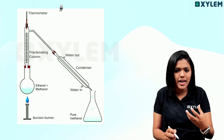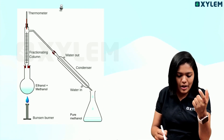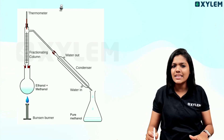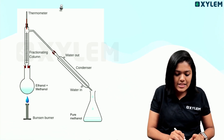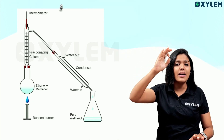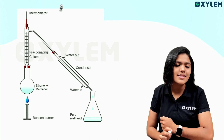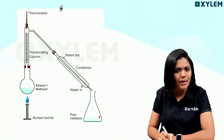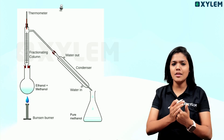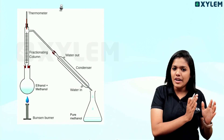Methanol boiling point is 65 degrees Celsius and ethanol boiling point is 78 degrees Celsius. When we heat the mixture, the boiling point of methanol is lower, so methanol vaporizes first. This is the fractionating column — evaporation and condensation occur. This is the water condenser. That is why we can separate methanol, because the boiling point difference is very low.